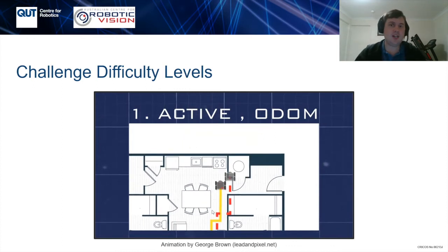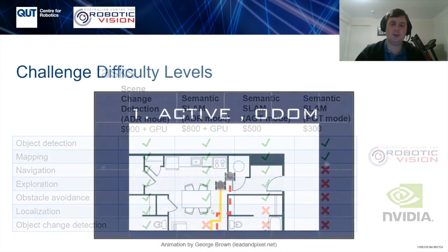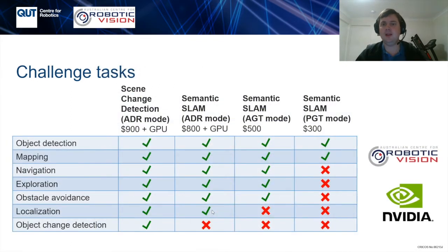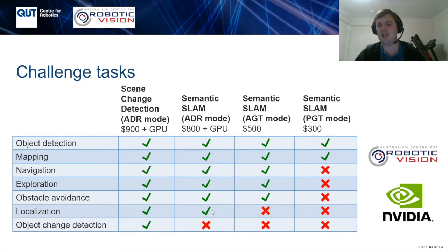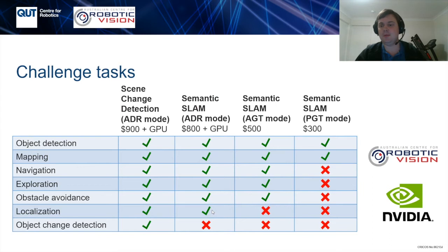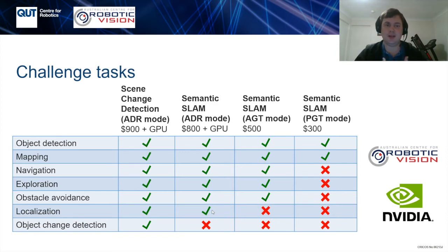Because we had these different challenge tasks and difficulty levels, we were able to split up our prize pool accordingly, rewarding more heavily the more challenging tasks — starting from semantic SLAM with passive ground truth mode, all the way to scene change detection with active dead reckoning. We provided monetary prizes sponsored by the Australian Centre for Robotic Vision, and GPU prizes available sponsored by NVIDIA. Thank you very much to both those organizations for sponsoring this challenge.